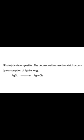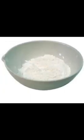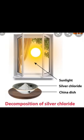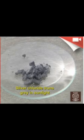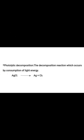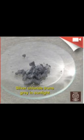Photolytic decomposition requires light. For example, if we place silver chloride in sunlight, it converts into silver and chlorine gas. Silver chloride is a white-colored powder in a china dish. If we keep it in sunlight, after some time it turns gray — meaning it has changed into silver and chlorine gas has come out. This is a chemical change — photolytic decomposition occurs and the color is changed.